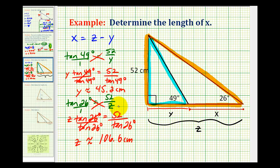So now remember our goal here was to determine the length of x. And x is equal to z minus y. So x is approximately equal to one hundred six point six minus forty-five point two. So x is approximately equal to sixty-one point four centimeters. Again, which is the length of this segment here.